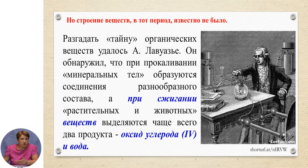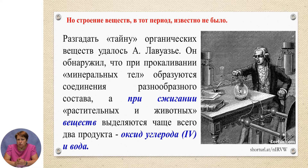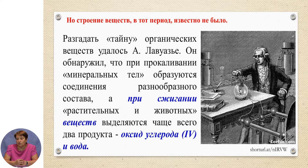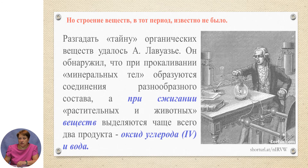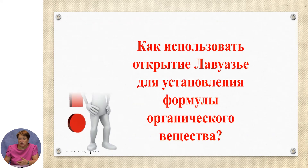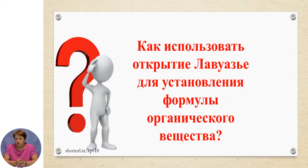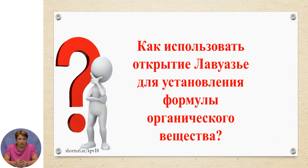But the structure of substances was not known at that time, and the secret of organic substances was finally revealed by the French scientist Antoine Laurent Lavoisier. He discovered that when mineral bodies are calcined, compounds of various compositions are formed, whereas when plant and animal substances are burned, carbon dioxide (CO₂) and water are released.